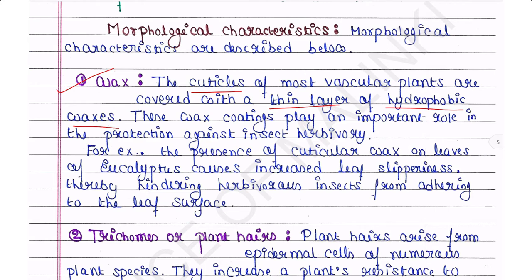Plants have different ways to protect themselves from insects. For example, the presence of cuticular wax on leaves of Eucalyptus provides the leaves with slipperiness, thereby hindering herbivorous insects from adhering to the leaf surface — as the leaves are slippery, it is difficult for insects to adhere.